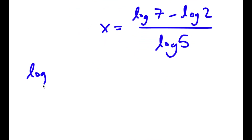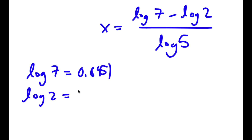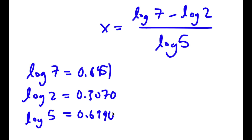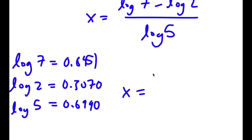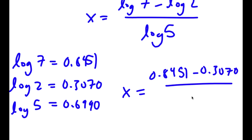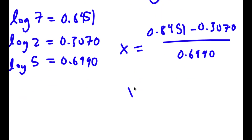Now log 7 is equal to 0.8451, log 2 is equal to 0.3070, and log 5 is equal to 0.6990. So x is equal to 0.8451 minus 0.3070 over 0.6990, which is equal to 0.7784.